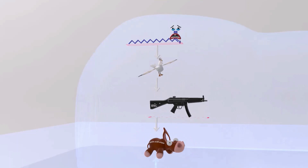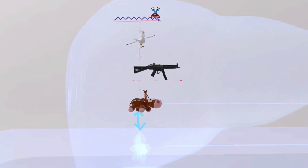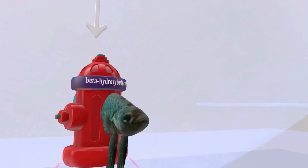He didn't like being a heavy machine gun, so he converted himself into a donkey — a sitting ass. A sitting ass that was pretty good at tasting: a sitting ass that can taste for acetoacetate. This is the first of the three ketone bodies we're going to talk about.